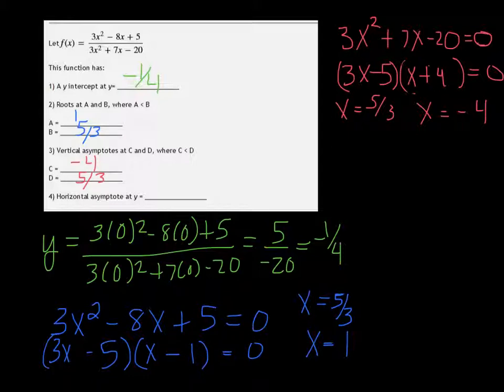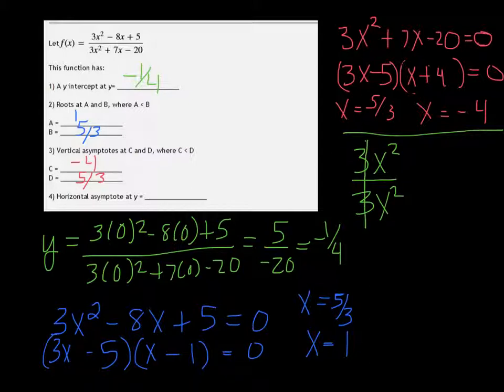In the horizontal asymptote, if we look at the leading terms in each one, which are the 3x squared, so 3x squared over 3x squared, the 3s are going to cancel, and we get that there's a horizontal asymptote...